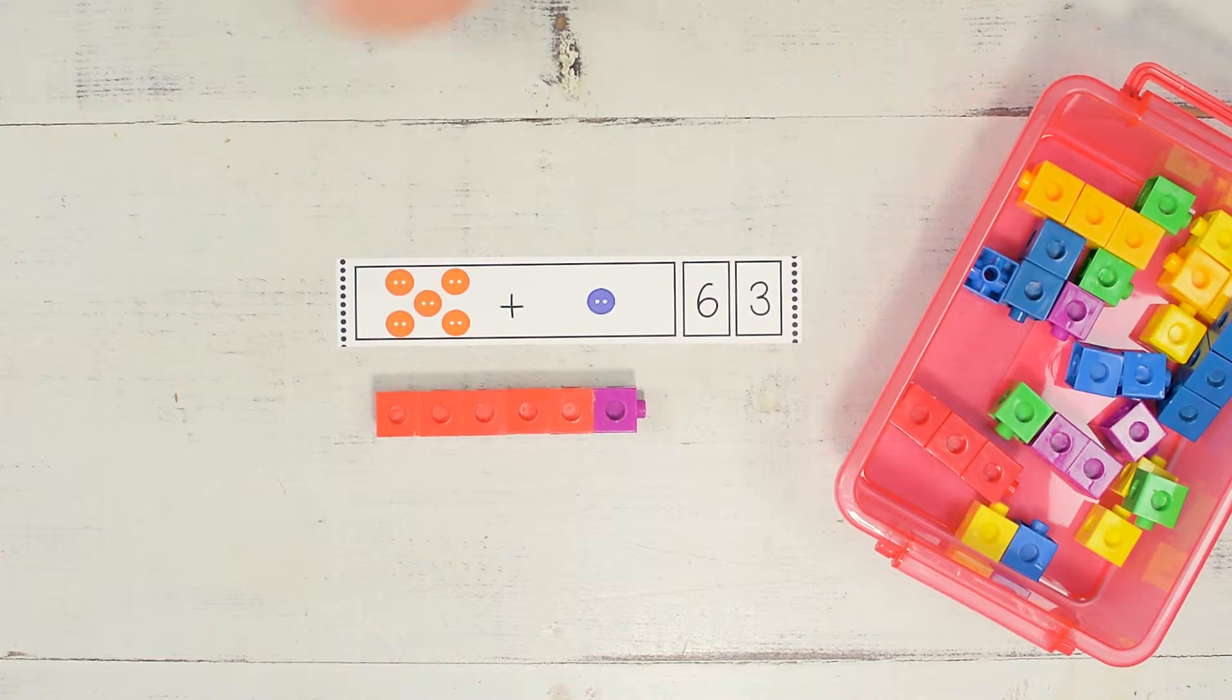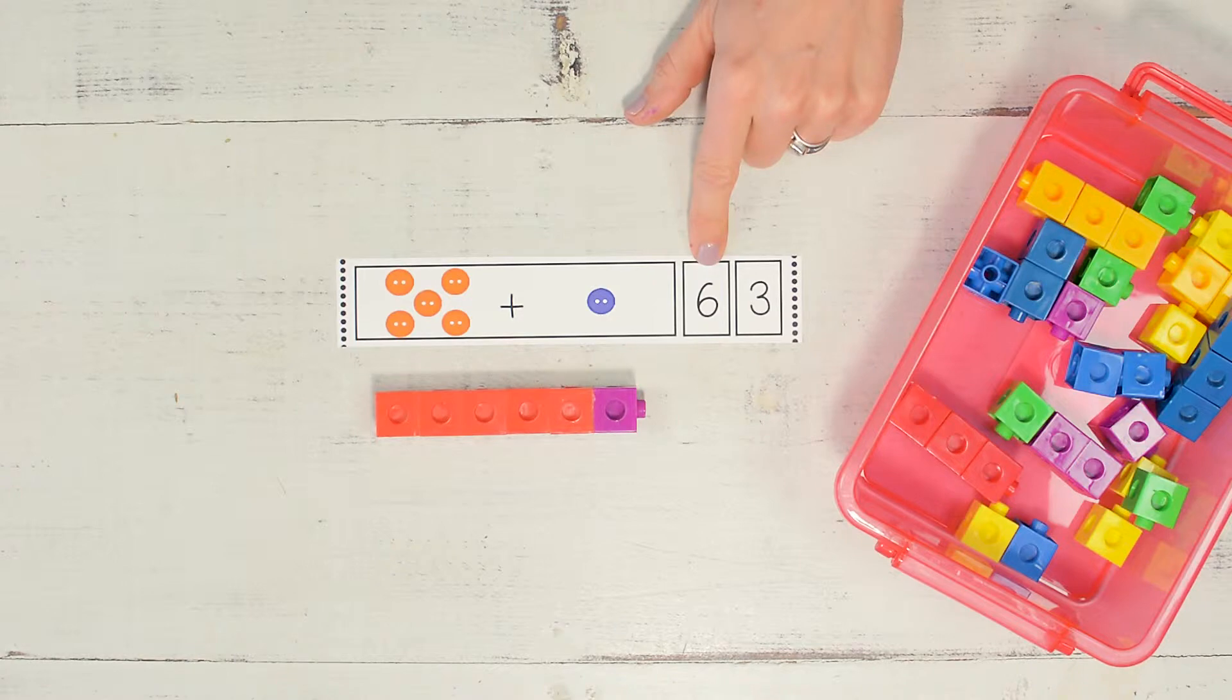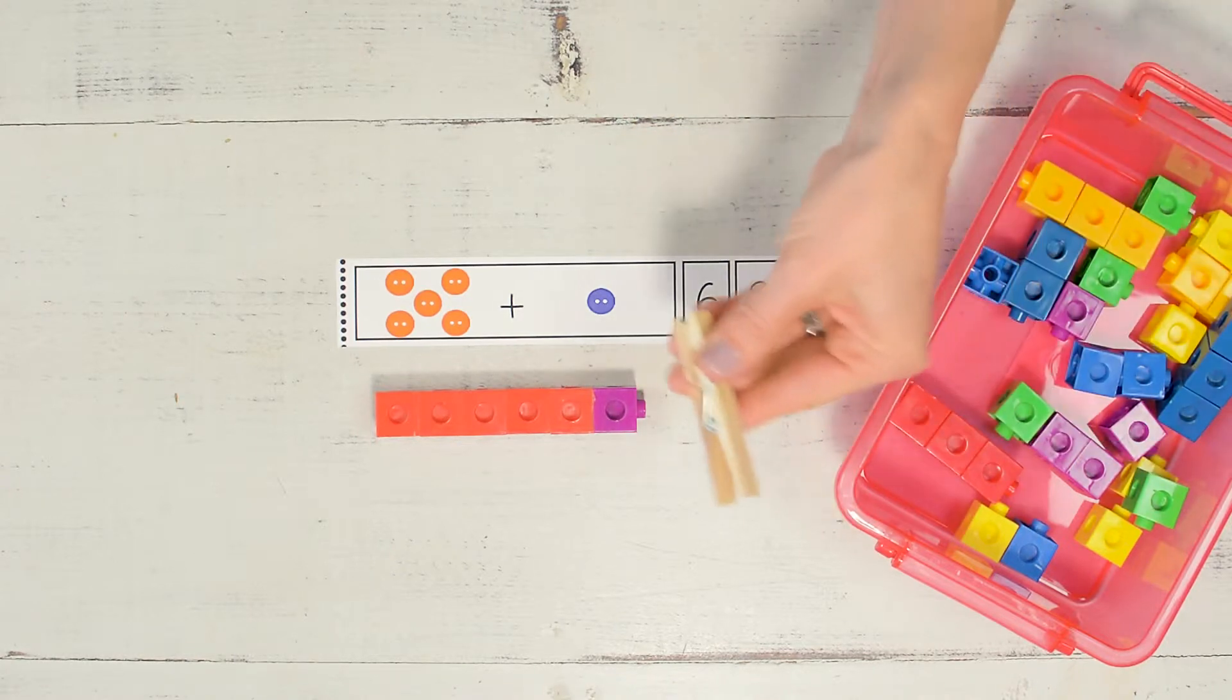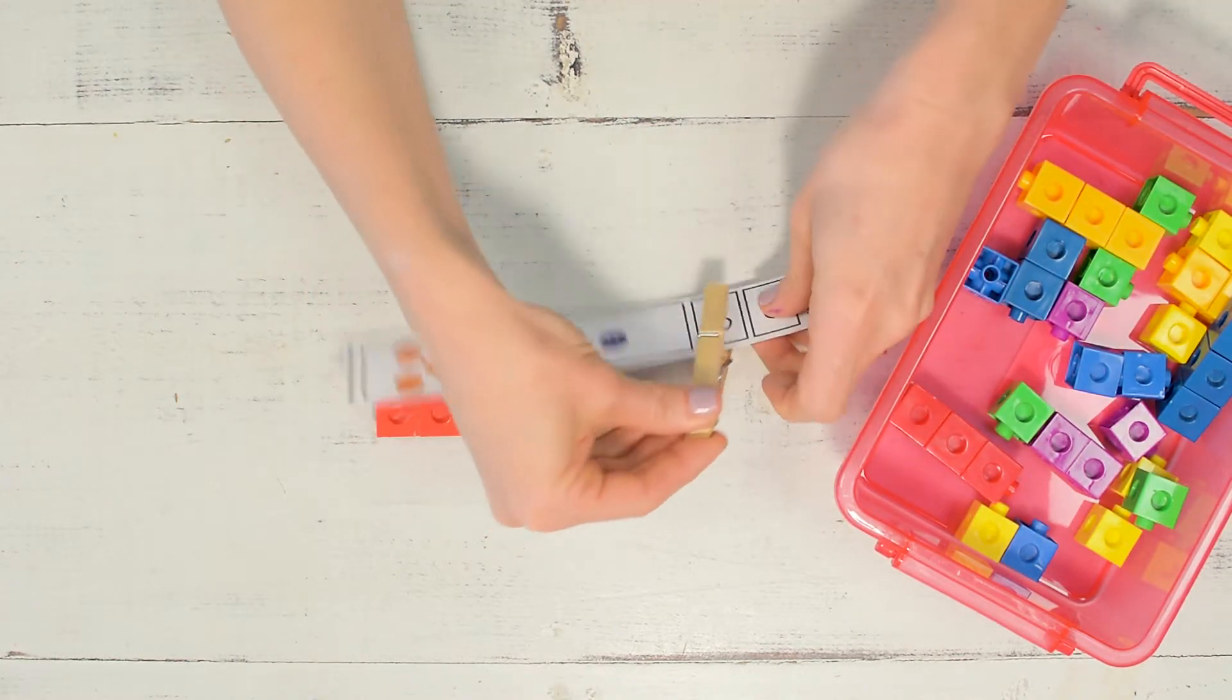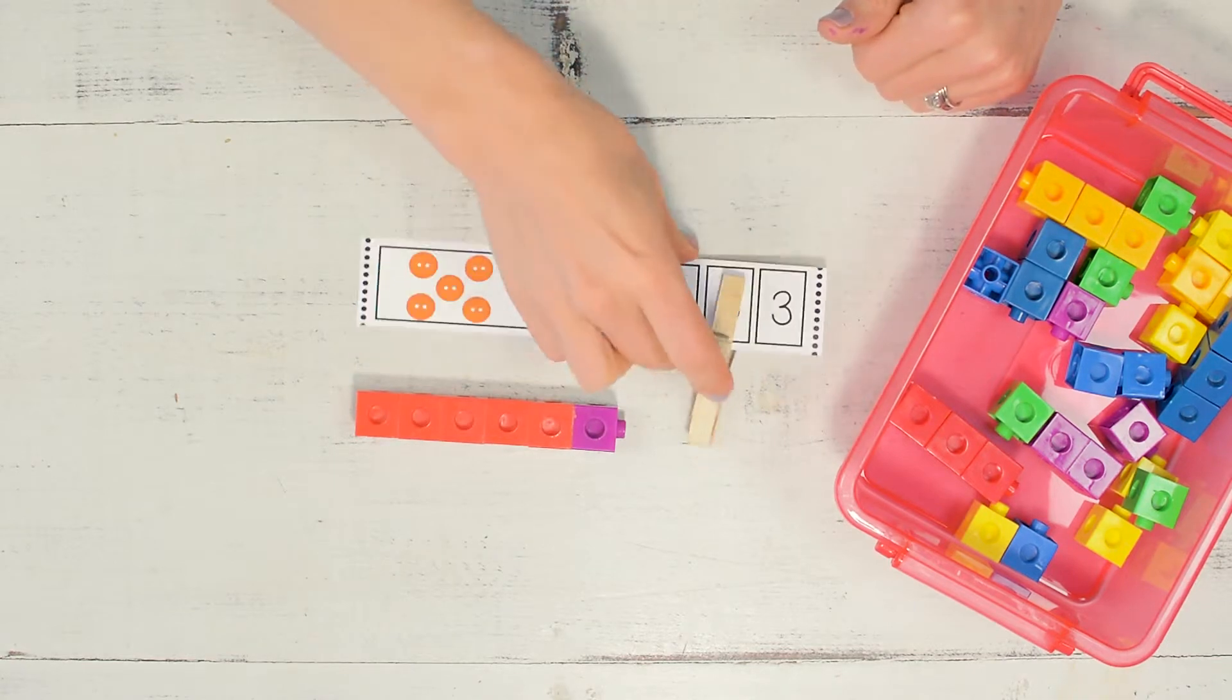Can you find the six? Which of these is the six? And you can circle it or if you've got some snap cubes, you can snap it.